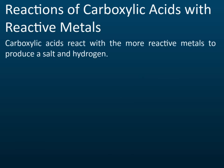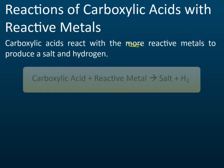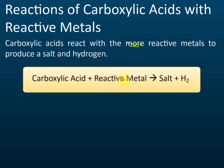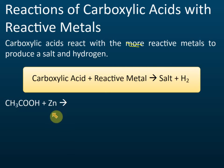Carboxylic acid can react with more reactive metals to produce salt and hydrogen gas. For example, carboxylic acid reacts with a reactive metal to produce salt and hydrogen gas. Example: ethanoic acid reacts with zinc.